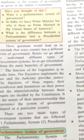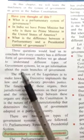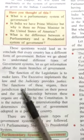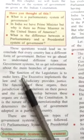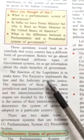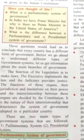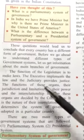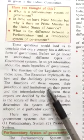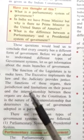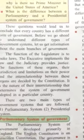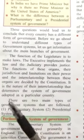Each country has a different form of government. Before we go ahead to understand different types of government systems, let us give information about the main branches. The function of the legislature is to make laws — it makes different laws and rules. The executive implements the law, and the judiciary provides justice. The functions of these organs, their jurisdiction, limitations on their power, and the inter-relationship between these organs are decided by the Indian constitution. It is the nature of this relationship that determines the system of government.